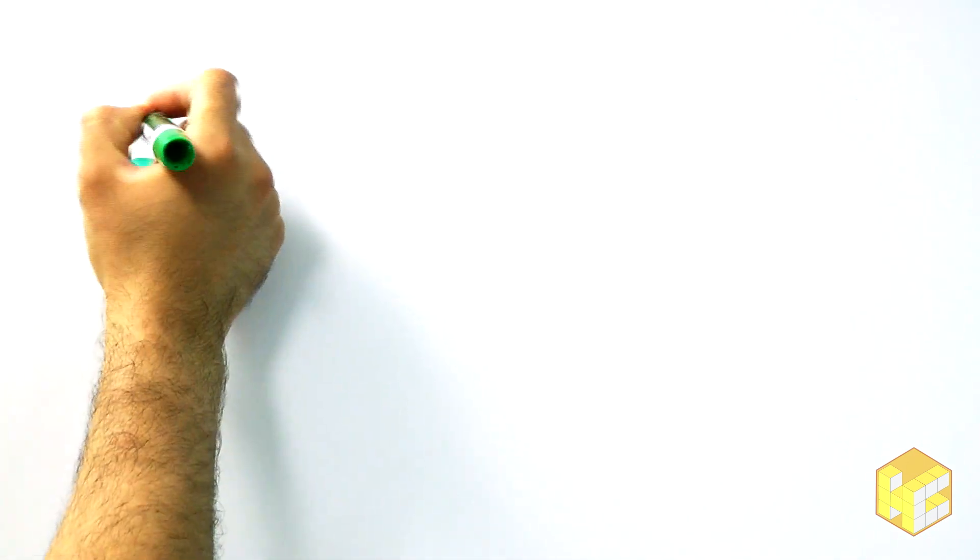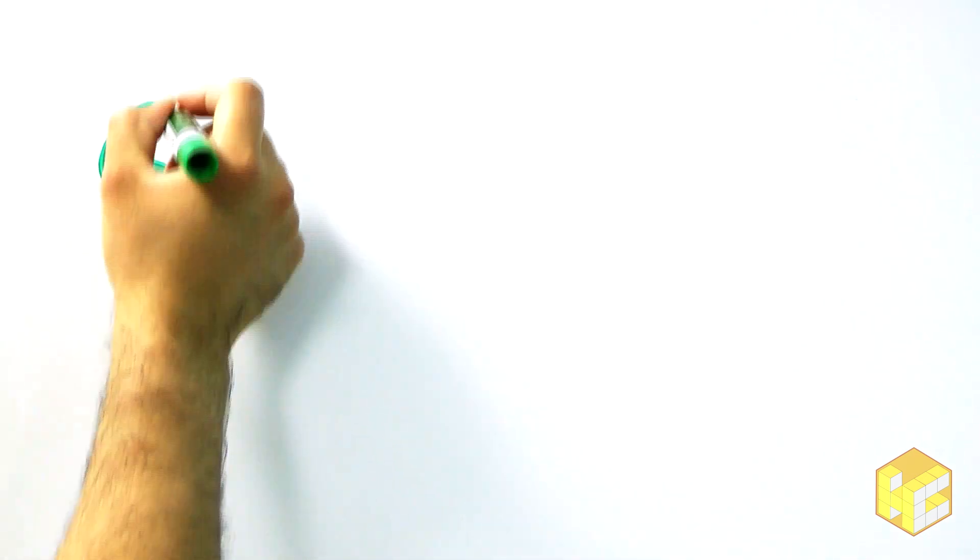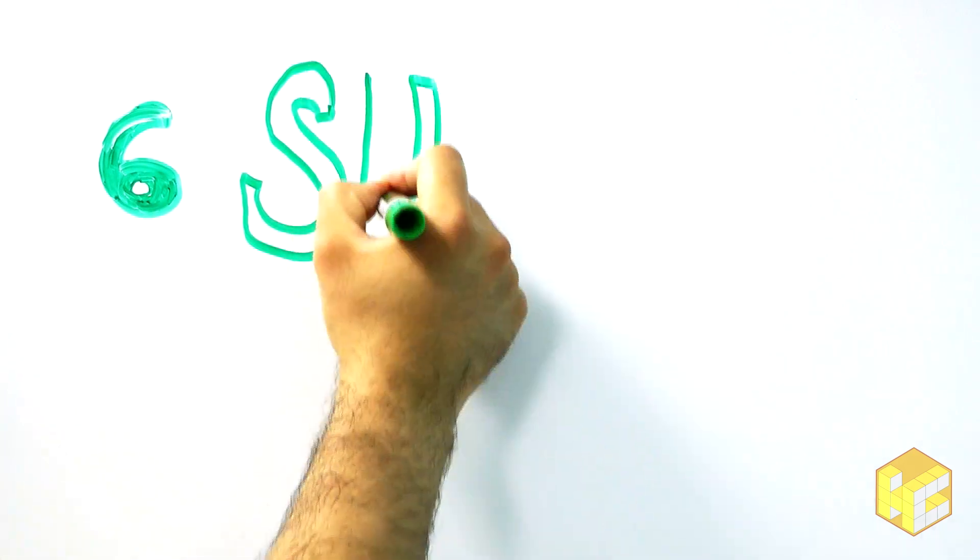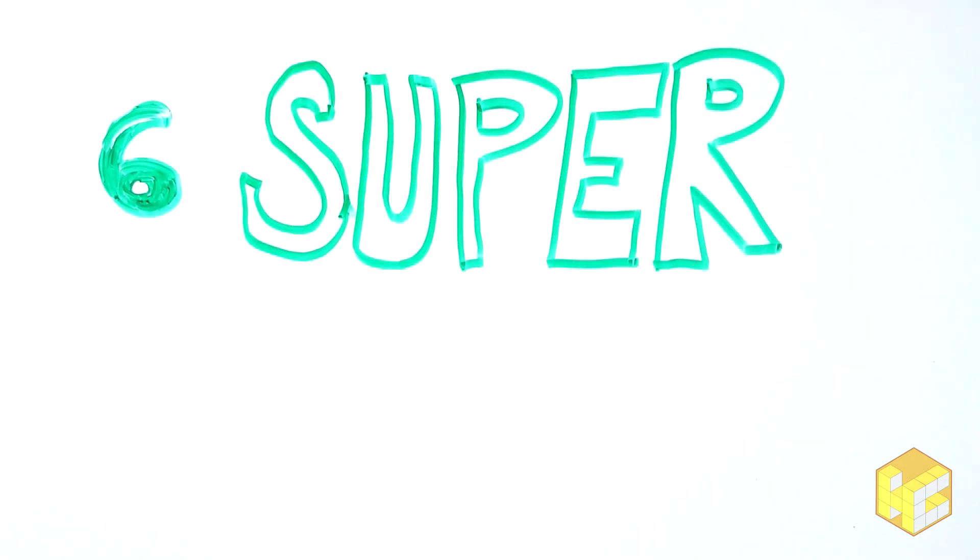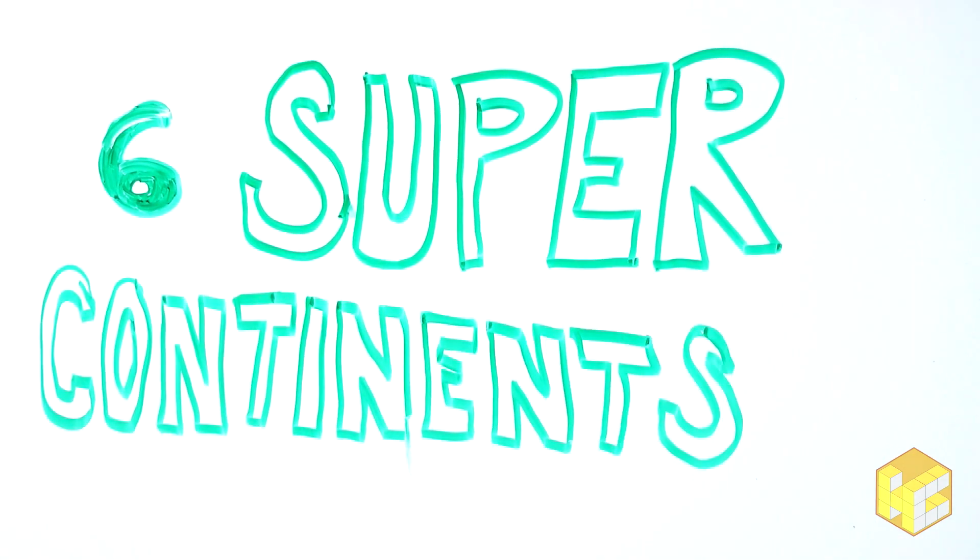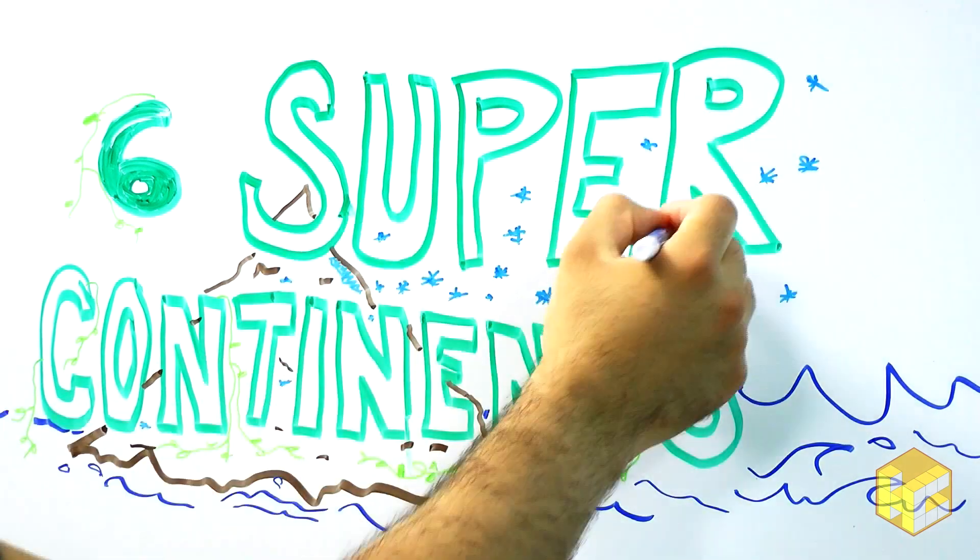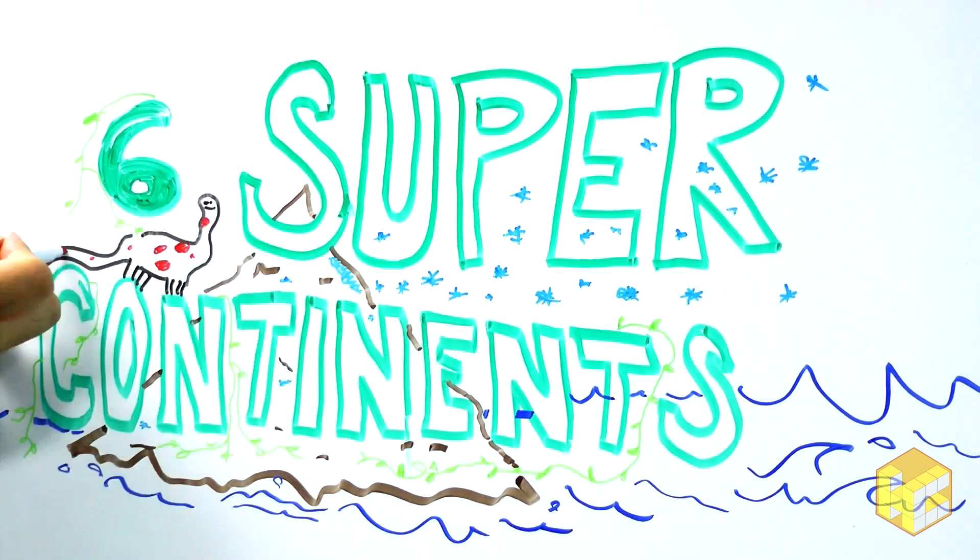Most people know about Pangaea, but were you aware that there were a total of six major supercontinents in Earth's history? Cool, right? But it gets more interesting. Supercontinents were at least partially responsible for global glaciation events, and ultimately, the evolution of complicated life forms. That got your attention, didn't it?